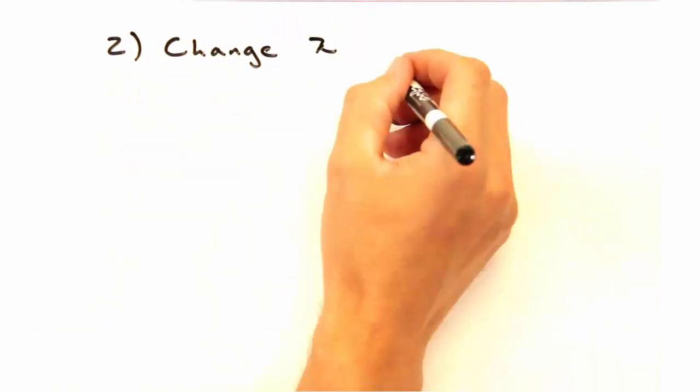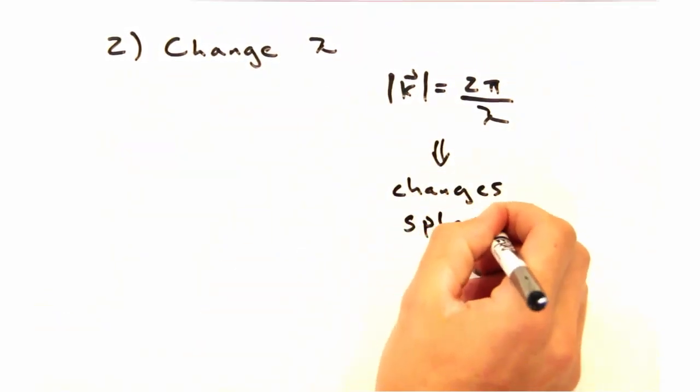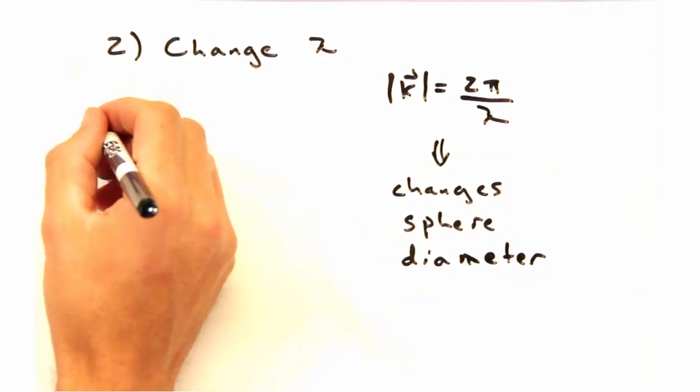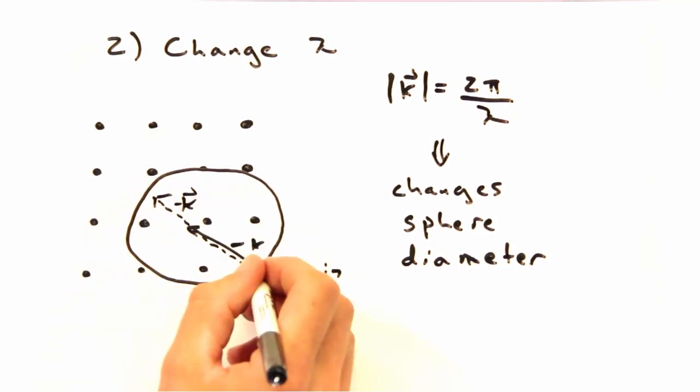Could we also change the wavelength? Since the magnitude of k and k prime is 2 pi over lambda, a smaller wavelength should make the sphere bigger. And a bigger sphere is more likely to intersect more points for a given change.